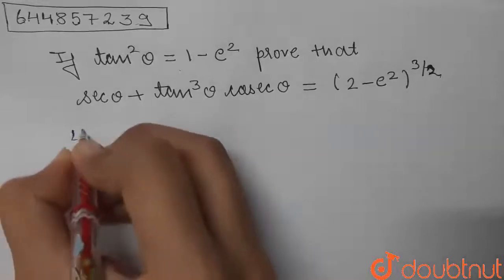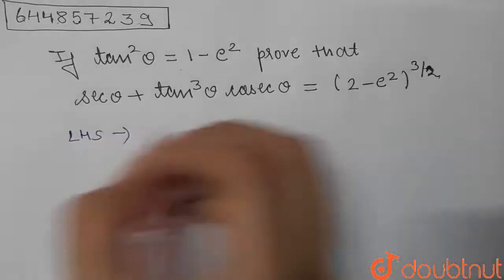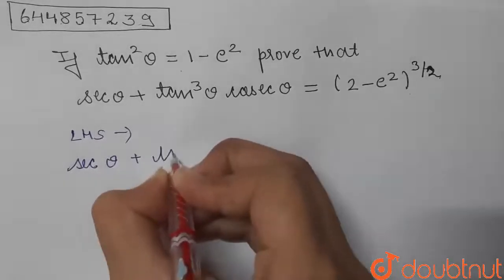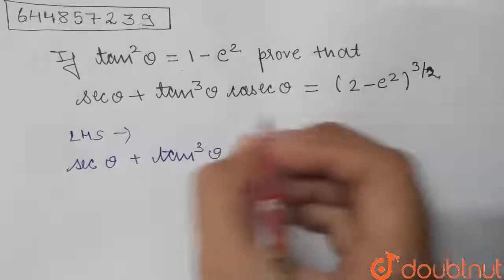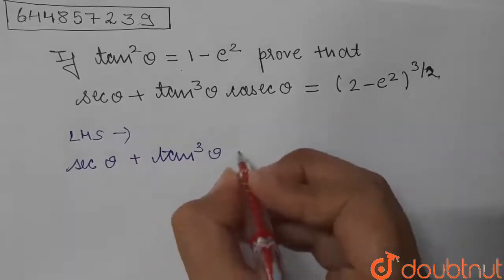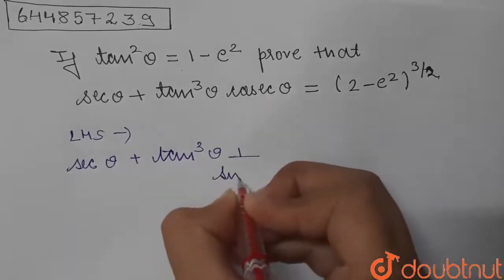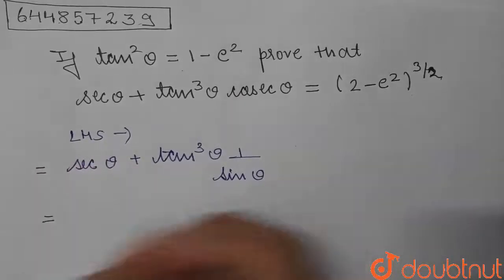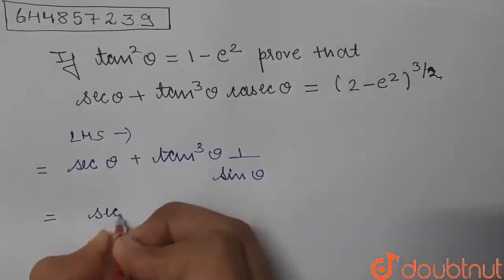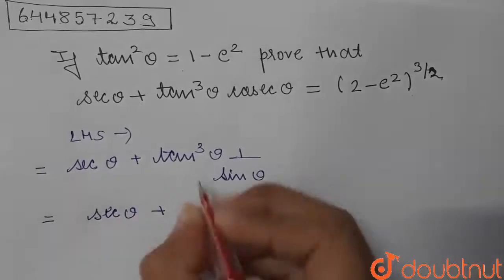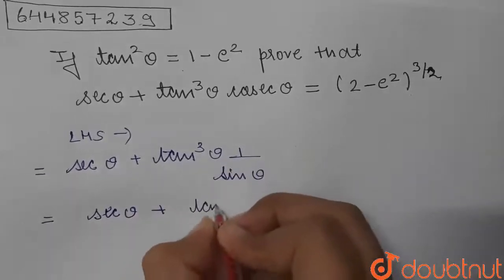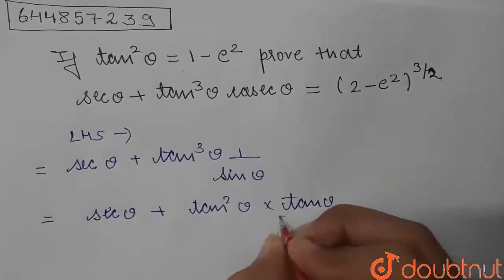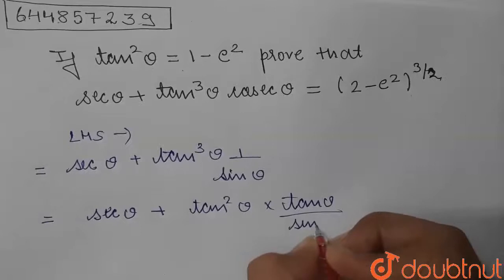I'm starting with the left hand side. On the left hand side, we are given sec theta plus tan cubed theta into cosec theta, and cosec theta is nothing but 1 by sine theta. So we can write directly 1 by sine theta. Now, tan cubed theta can be written as tan squared theta into tan theta, divided by sine theta.